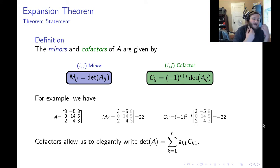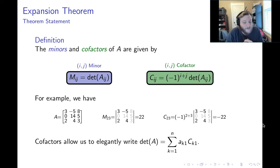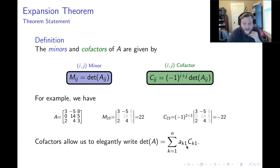One reason we care about cofactors is that they allow us to clean up the determinant formula. Remember there is a negative 1 to the 1 plus k in the determinant formula — that gets absorbed into the cofactor notation. So we can more easily remember the formula for determinants as the sum from k equals 1 to n of the k1 entry of the matrix multiplied by the k1 cofactor.